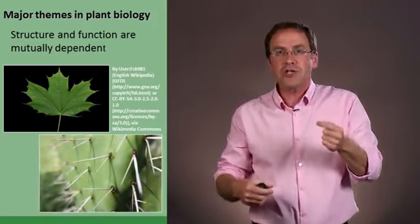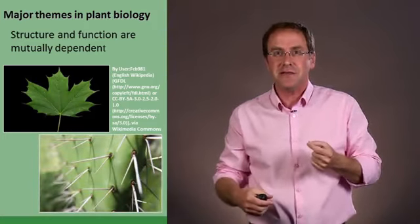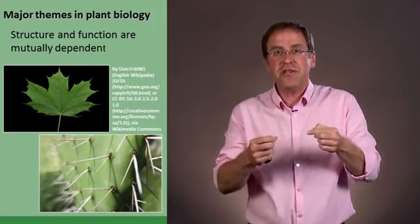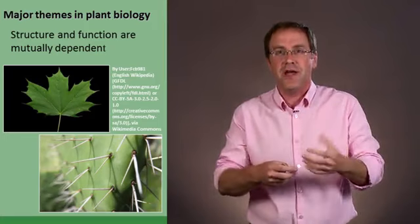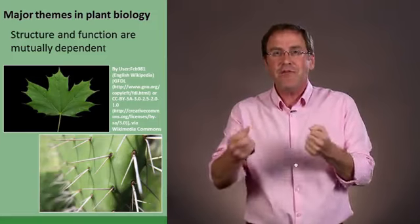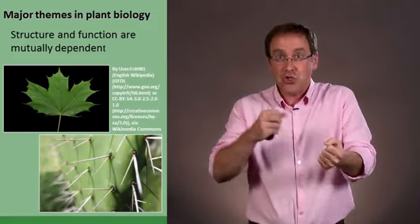But what's the structure of a leaf in a cactus? It's a thorn. And it has a different structure because its function is different. It's actually trying to conserve area. It doesn't want to lose water. So it's minimalized its leaf. So everything we see about a plant, its structure,